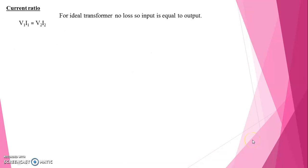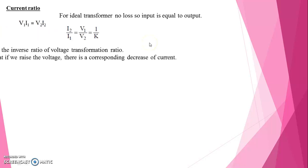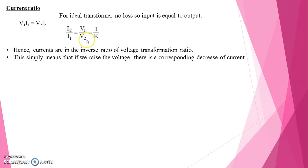Let us take current ratio. For ideal transformer there will be no losses. That means input is equal to output where V1 I1 is equal to V2 I2. Let us take current ratio, secondary current to primary current, I2 to I1 which is equal to V1 by V2, so 1 by k.